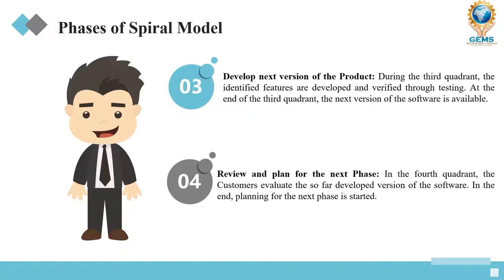The third phase, or third quadrant, of the spiral model talks about development. Based on what was gathered in the first and second phases, we perform the development work — coding and designing. In the third quadrant, the team develops the source code and then verifies it through various testing techniques and methods. At the end of the third phase, we also check for the availability of the next version of the software.